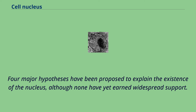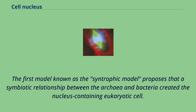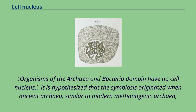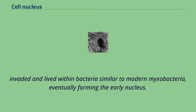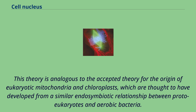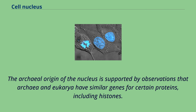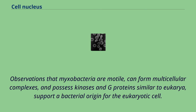The first model, known as the Syntrophic Model, proposes that a symbiotic relationship between archaea and bacteria created the nucleus-containing eukaryotic cell. It is hypothesized that the symbiosis originated when ancient archaea, similar to modern methanogenic archaea, invaded and lived within bacteria similar to modern myxobacteria, eventually forming the early nucleus. This theory is analogous to the accepted theory for the origin of eukaryotic mitochondria and chloroplasts, which are thought to have developed from a similar endosymbiotic relationship between proto-eukaryotes and aerobic bacteria. The archaeal origin of the nucleus is supported by observations that archaea and eukarya have similar genes for certain proteins including histones, while observations that myxobacteria are motile, can form multicellular complexes, and possess kinases and G proteins similar to eukarya support a bacterial origin for the eukaryotic cell.